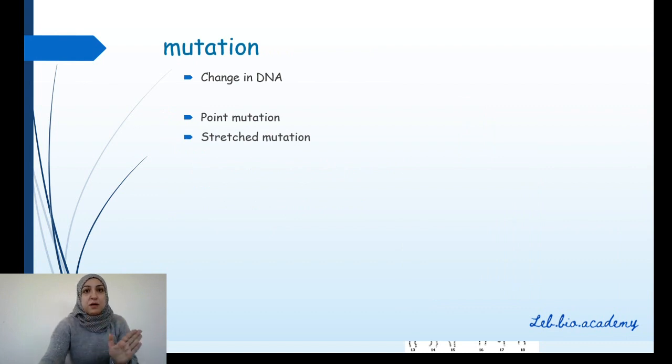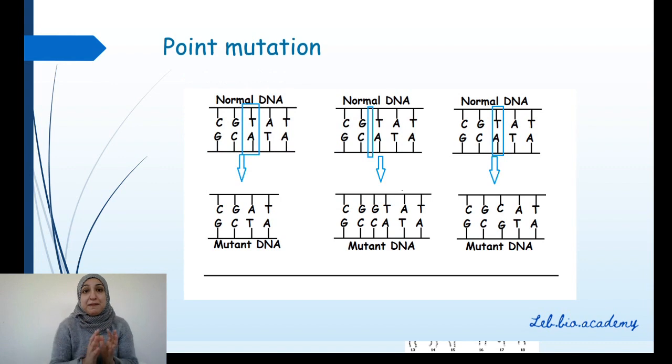Mutation is a change in DNA. There are two large titles in gene mutation: point mutation when one nucleotide is changed, and stretch mutation when many nucleotides are changed. In this lesson, we will talk only about the point mutation, this change that occurs in only one nucleotide. In the first part, this is the normal DNA and this is the mutant DNA. What's the difference? You can see that one nucleotide disappeared. One nucleotide is deleted. And that's why this type of mutation is called deletion.